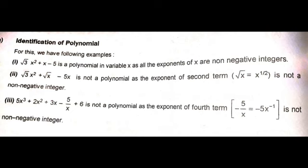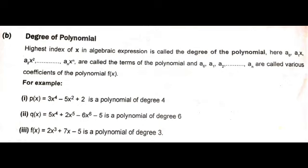In the definition I used the word degree of polynomial. The highest index of x in an algebraic expression is called the degree of the polynomial. In the polynomial definition, the different terms are a₀, a₁x, a₂x², and so on till aₙxⁿ — these are called the terms of the polynomial. Whereas a₀, a₁, a₂, …, aₙ are called the various coefficients of the polynomial f(x). We generally denote the polynomial as f(x) or p(x), where x represents the variable.